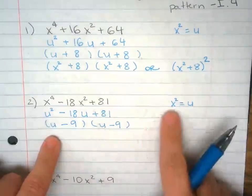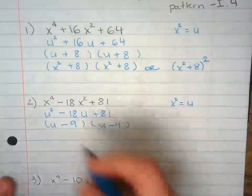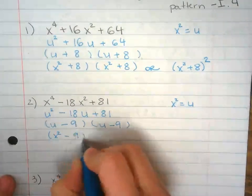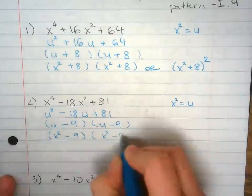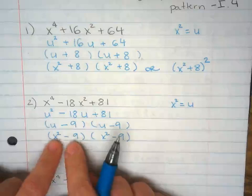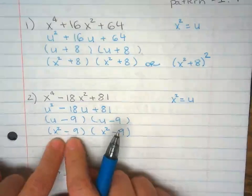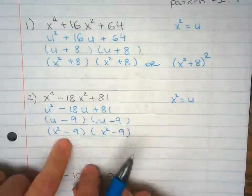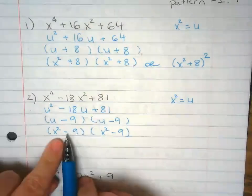I'm going to go back to x squared how that was. So x squared minus 9, x squared minus 9. Now be careful with this. I can simplify this one more time because this is difference of squares. This is a perfect square, there's a minus right here, and perfect square, perfect square.